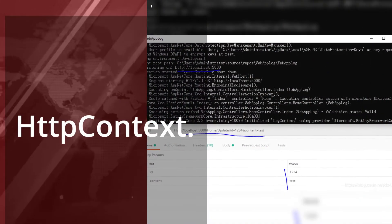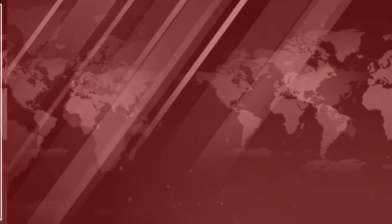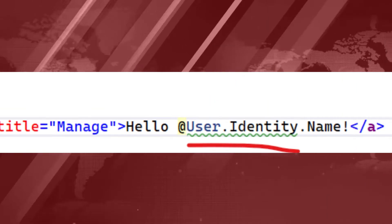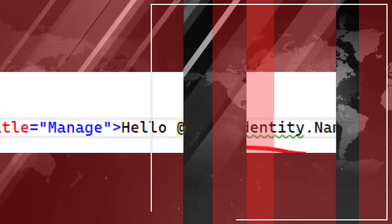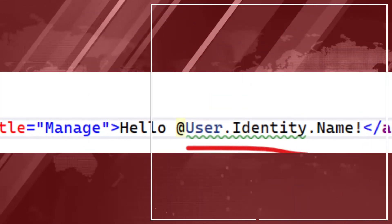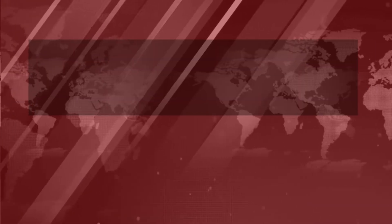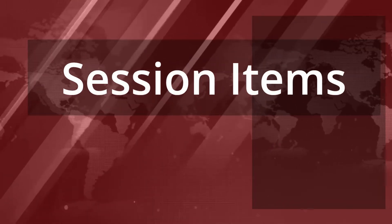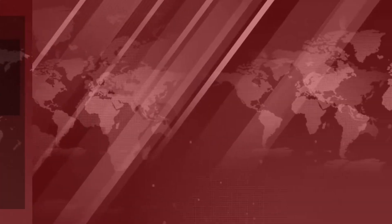The first one is HTTP Context. For example, the username will be fetched from HTTP context.user.identity.name. The next one is Session Items, which is based on IService Collection.